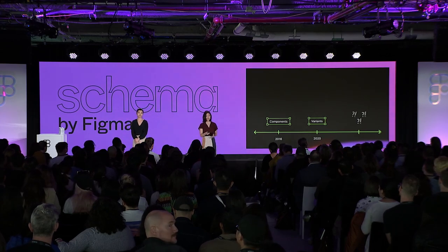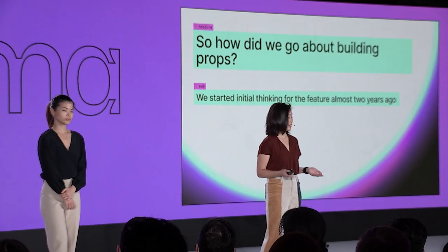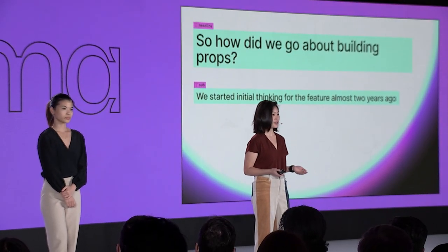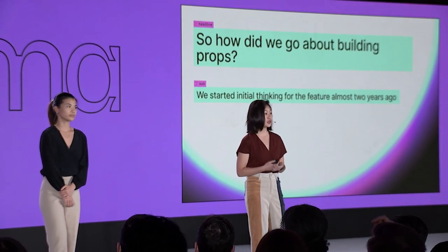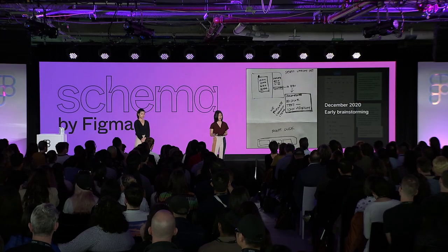So how did we go about building component properties? We actually started the initial thinking for this feature almost two years ago, shortly after the launch of variants. In December 2020, we began early brainstorming, where our cross-functional team got together to sort out different solutions for issues like variant explosion.